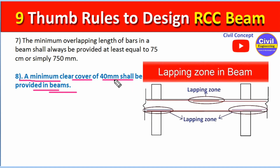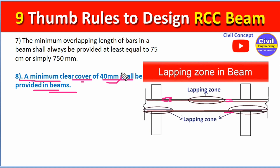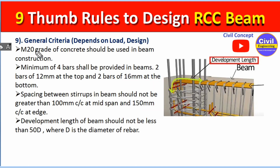Point number eight: a minimum clear cover of 40 mm shall be provided in the beam. The clear cover is the distance between the rebar and the upper or lower surface of the beam — the gap between the rebar and the concrete surface. It should not be less than 40 mm.